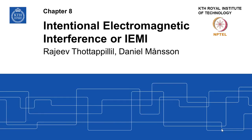Chapter 8: Intentional Electromagnetic Interference, or IEMI. So far we have been dealing with EMC issues where the source occurs naturally, either due to natural phenomena or due to the inherent nature of the equipment that we use — interference created by equipment or by lightning.